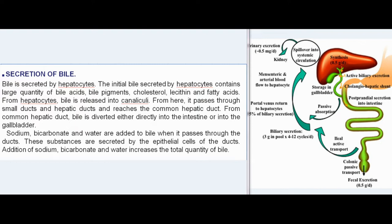Bile is secreted by hepatocytes. The initial bile secreted by hepatocytes contains large quantities of bile acids, bile pigments, cholesterol, lecithin, and fatty acids. From hepatocytes, bile is released into canaliculi, then passes through small ducts and hepatic ducts to reach the common hepatic duct. From there, bile is diverted either directly into the intestine or into the gallbladder.